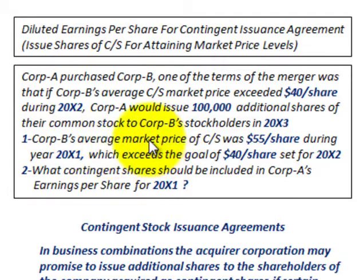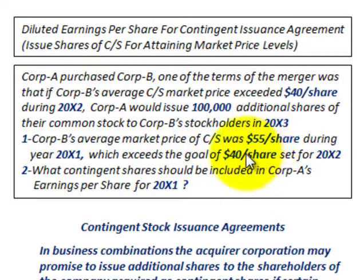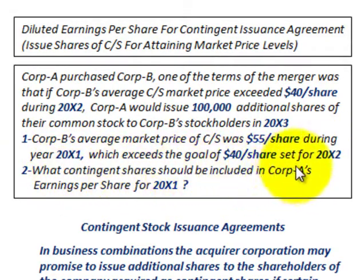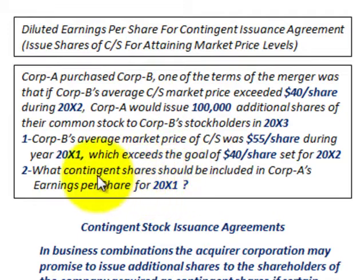Corporation B's average market price for their common stock was $55 per share during year 20x1, which exceeds the goal of $40 per share that was set for year 20x2. So the question is: what contingent shares should be included in Corporation A's earnings per share in year 20x1? We're really dealing with three separate years here to determine what contingent shares should be included for year 20x1.